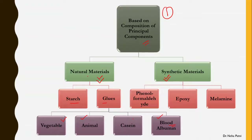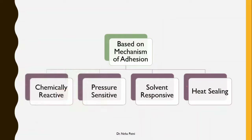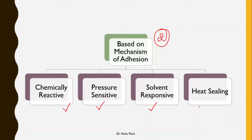Coming to synthetic materials: phenol formaldehyde resin, epoxy resins, UF resins, and melamine resins — these are materials we synthesize in the laboratory. The second classification is based on the mechanism of adhesion — how the adhesive works. It could chemically react with the adherent, work when you apply pressure, work when a solvent is added, or work when you apply heat.